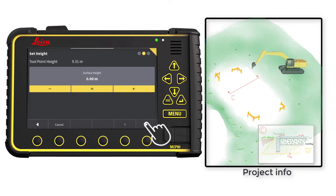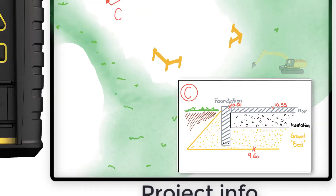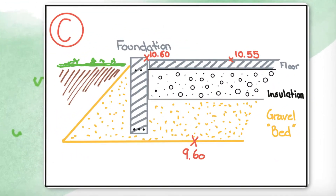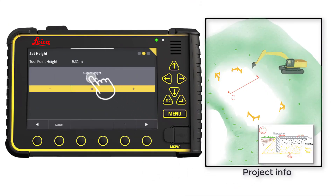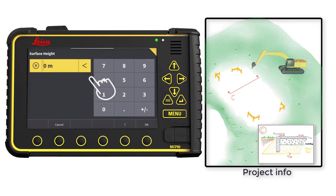According to the project plan, we need to start our gravel bed at height 9.60. Enter the value 9.60 and press OK.